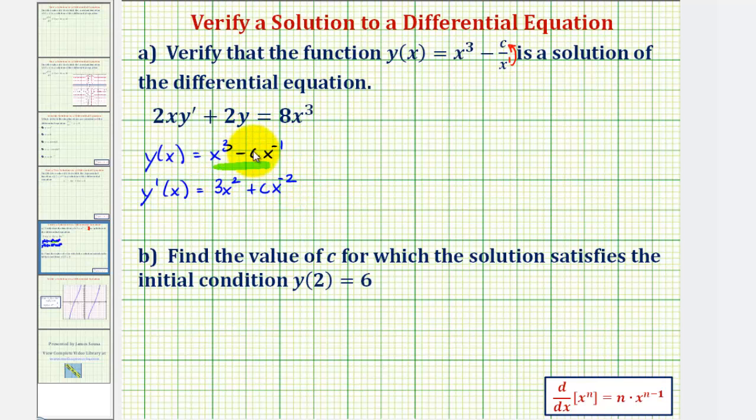And then we'll make a substitution for y and for y prime. So for 2xy prime, we'd have 2x times 3x², plus cx to the power of negative two. And then for plus 2y, we'd have plus 2 times x to the third minus cx to the power of negative one.